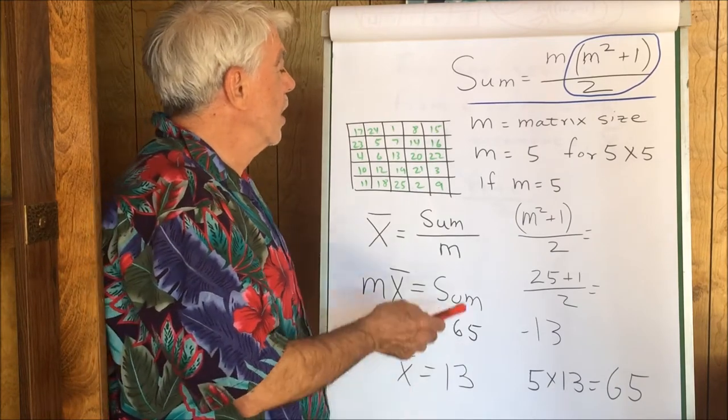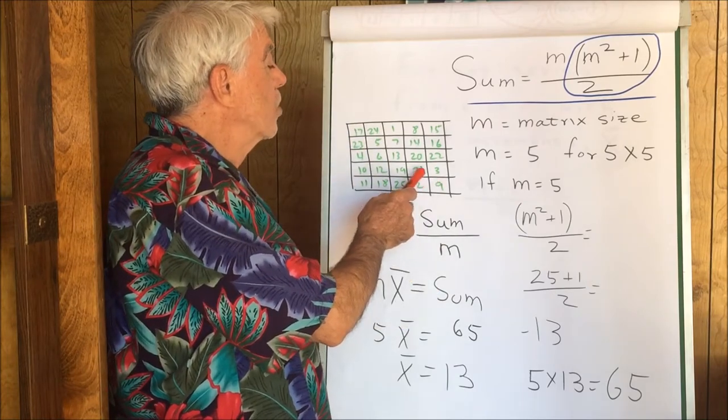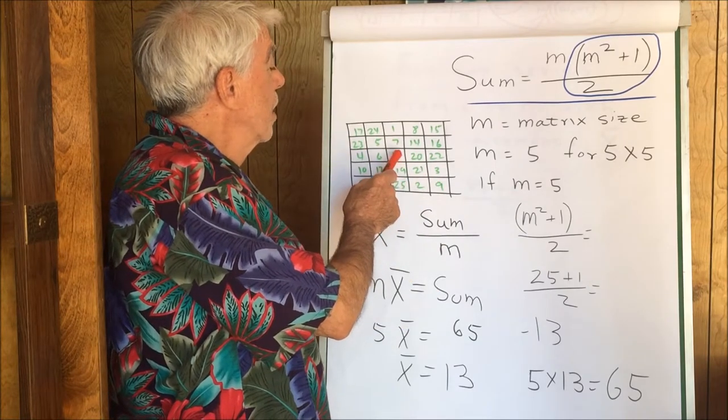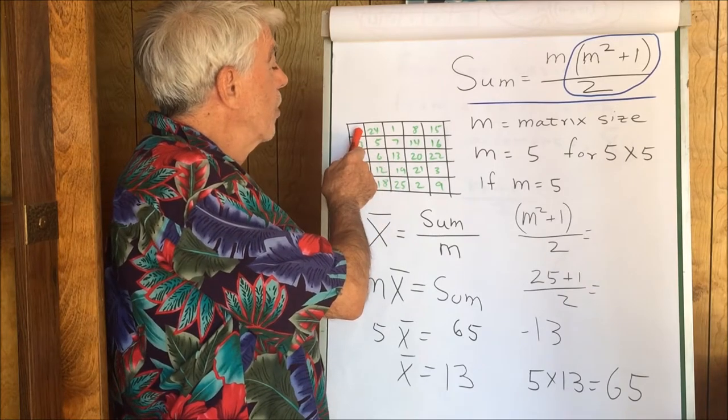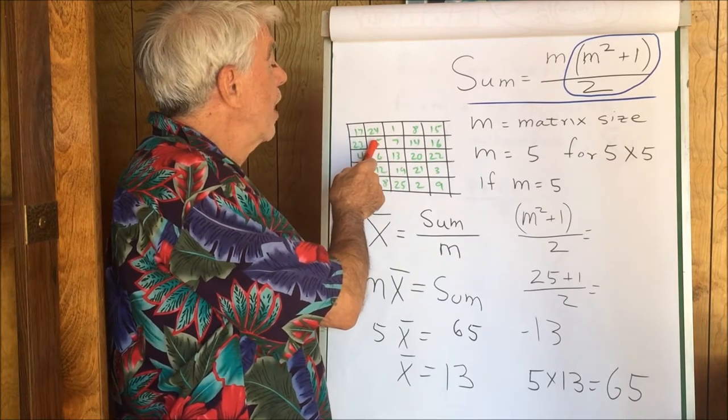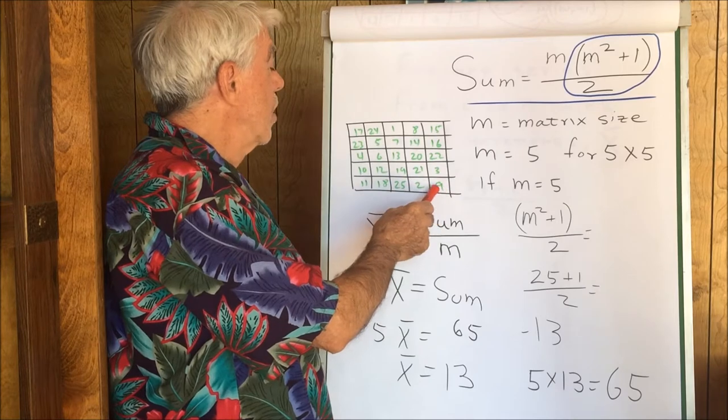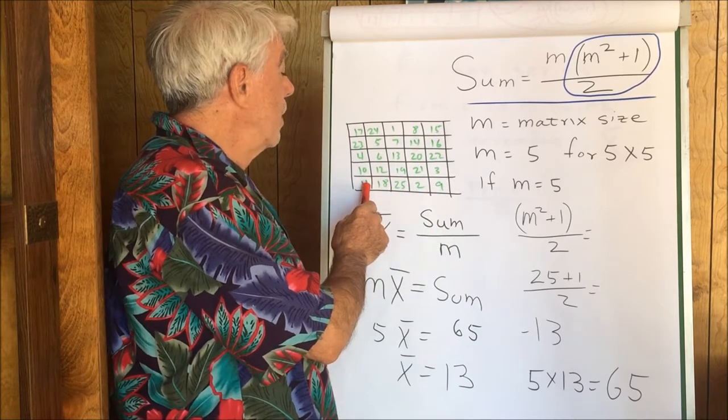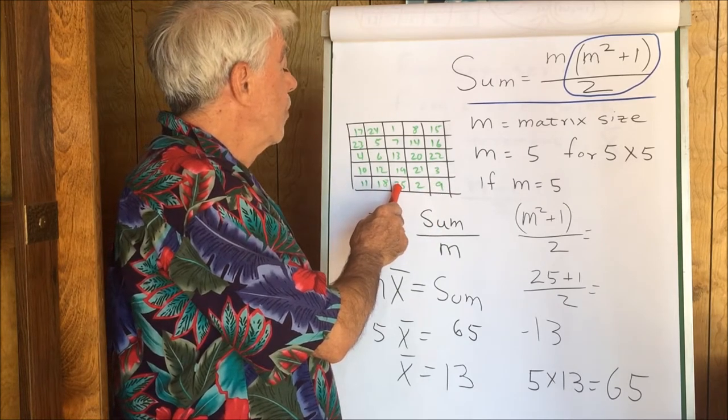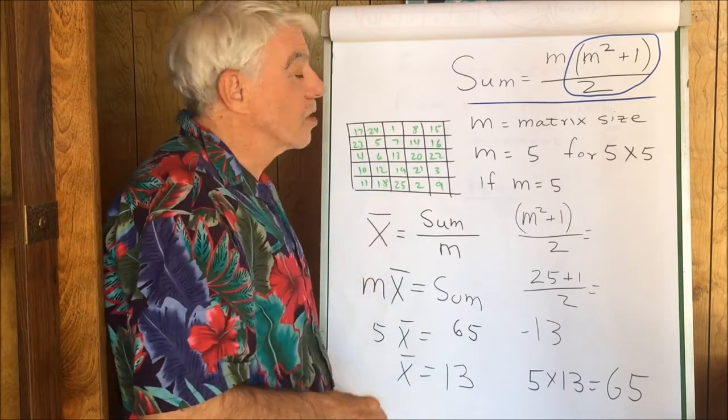Let's take a look here at this diagonal, for example. 9 and 21, 30. 13 and 17, another 30. Gives us 60 and 5, 65. Going across this way, 9 and 11, 20, plus 25, 45, plus another 20, 65.